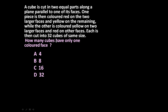The given problem is: a cube is cut into two parallel parts along a plane parallel to one of its faces. One piece is then colored red on the two larger faces and yellow on the remaining faces, while the other is colored yellow on the two larger faces and red on the other faces. Each is then cut into 32 cubes of the same size. The question is: how many cubes have only one colored face?